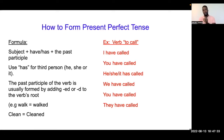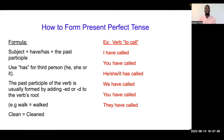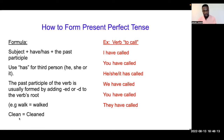Lo kreye passe participle pou verb en anglè — verb ki iwegiliye — yon ou pa ajoute -ed ou bien -d nan verb la. Men se pou verb ki iwegiliye. Gen verb ki iwegiliye web sa yon ou pa ka ajoute -d ou bien -ed. Par example: walk tonen walked, clean tonen cleaned.